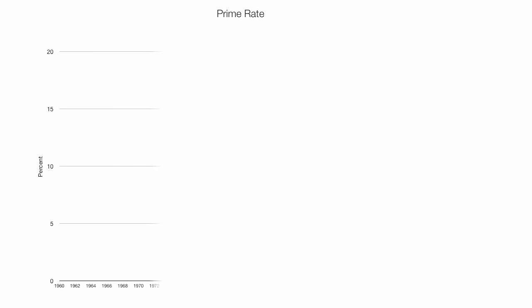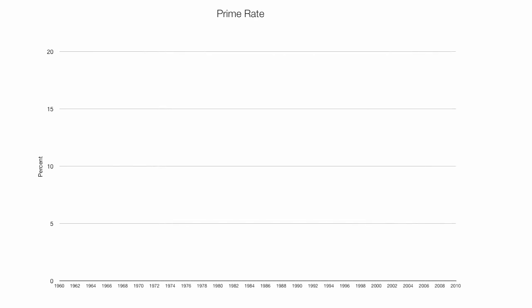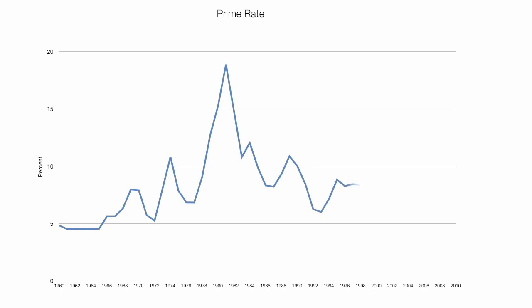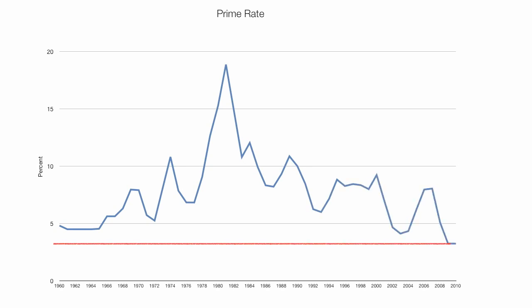Now another important interest rate, the prime rate, is also at a historical low. This is the prime rate from 1960 to present. The prime rate is the lowest it's been in 50 years, currently at 3.25% — the lowest rate in 50 years.